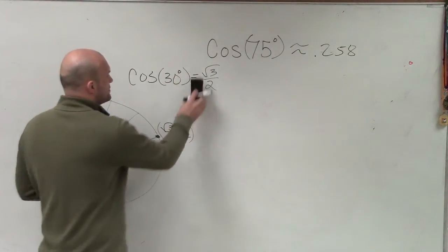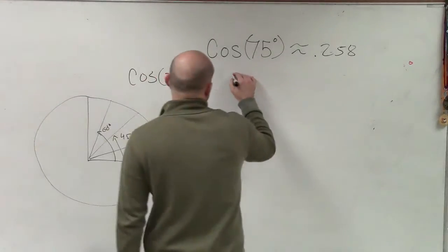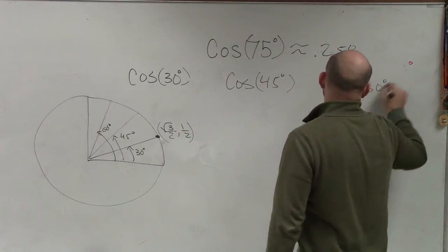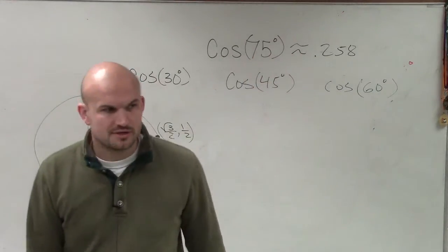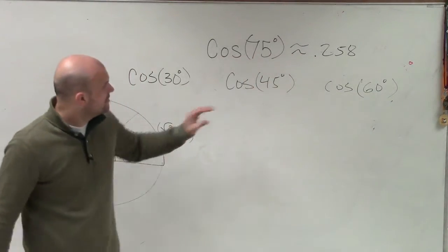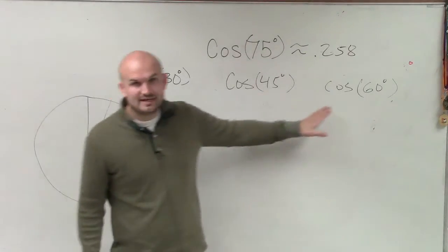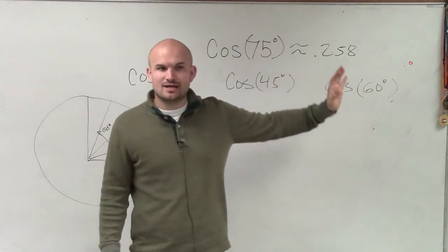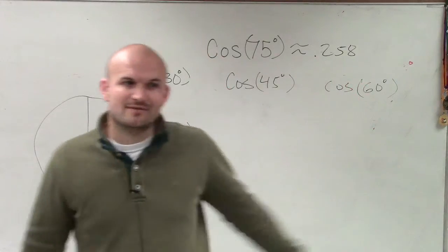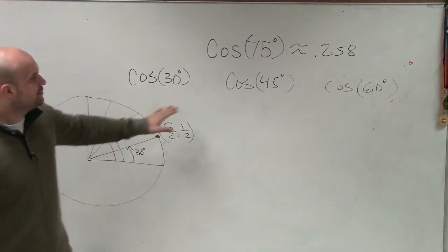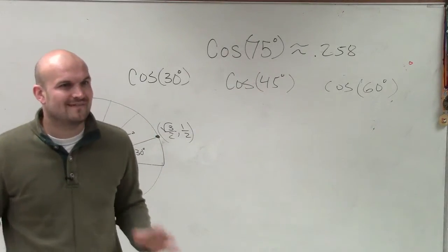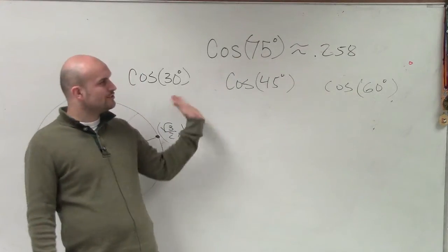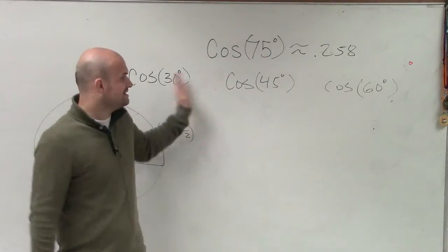So what I'm going to give you guys is some ideas. If cosine of 30 degrees equals square root of 3 over 2, let's take a look at cosine of 30 degrees, cosine of 45 degrees, and the cosine of 60 degrees. You could talk about 90 degrees as well, but let's just focus on these three right now. How do these three angles relate to 75 degrees? Think of addition and subtraction. So Maggie, do you maybe have an idea? How does 30, 45, and 60 relate to 75 in terms of addition and subtraction?